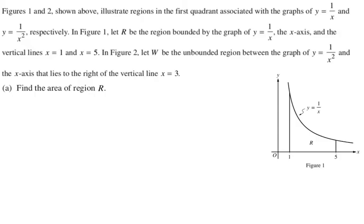Figures one and two, I didn't show figure two because I don't need it for this part. Figures one and two shown to the side illustrate regions in the first quadrant associated with the graphs of y equals one over x and y equals one over x squared respectively. In figure one, we're going to let R be the region bounded by the graph of y equals one over x, the x-axis, and the vertical lines x equals one and x equals five.